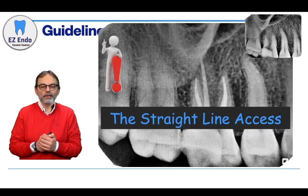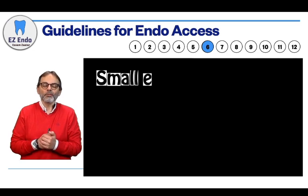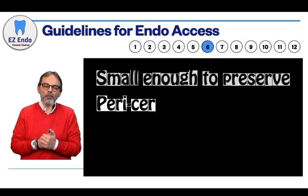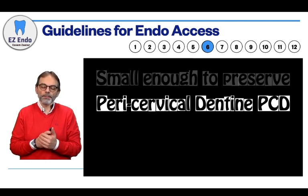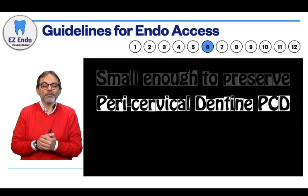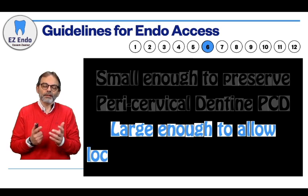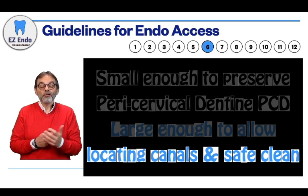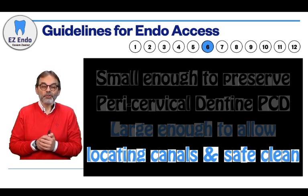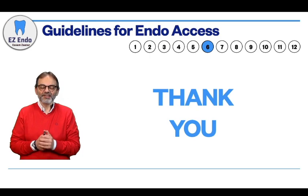As a sign of good gesture, I'm going to share my take-home point from the Arabic presentation. My recommendation for access form in endo cases: you want your access to be small enough to preserve pericervical dentin — we know what that means — but at the same time it needs to be large enough to allow for locating canals and cleaning them. Thank you very much and I appreciate you listening. Follow me in Arabic if you want to. Take care, bye.